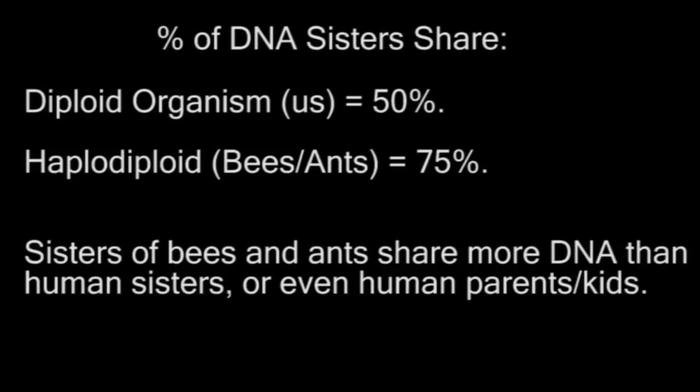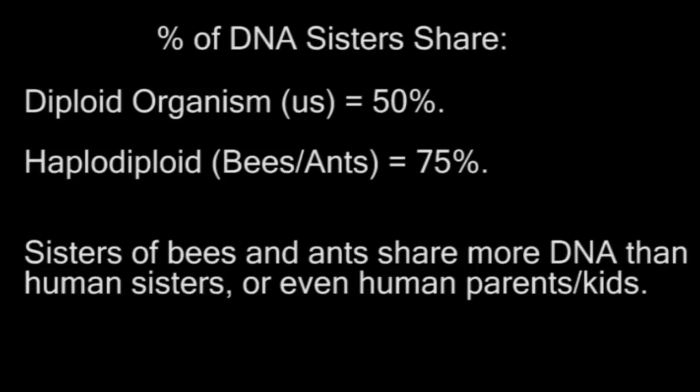So the total relatedness equals one-fourth from the mother plus one-half from the father, which equals three-fourths. To wrap it up: the relatedness between sisters in a diploid organism is one-half, but the relatedness between sisters in a haplodiploid species is three-fourths.